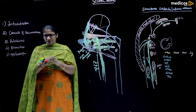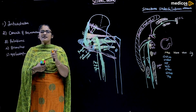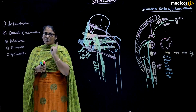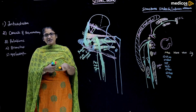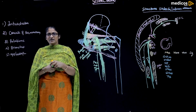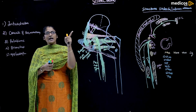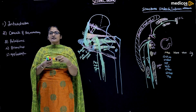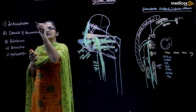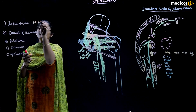Introduction: the sciatic nerve is the thickest nerve in our body. The longest cutaneous nerve is the saphenous nerve, and the thickest nerve is the sciatic nerve. The thickness of the sciatic nerve varies from 1.5 to 2 centimeters.